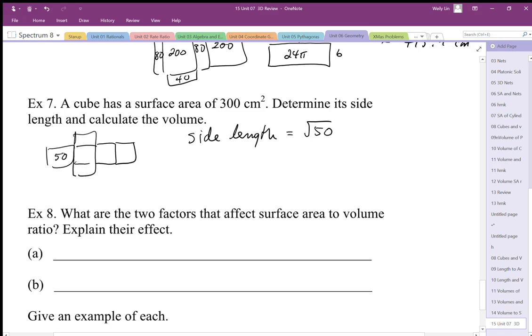Again, I prefer that you use the exact value. This is about 7.1 or 7.07. To calculate the volume, I'm just going to use the exact side length, square root 50, and I'm going to cube that number.